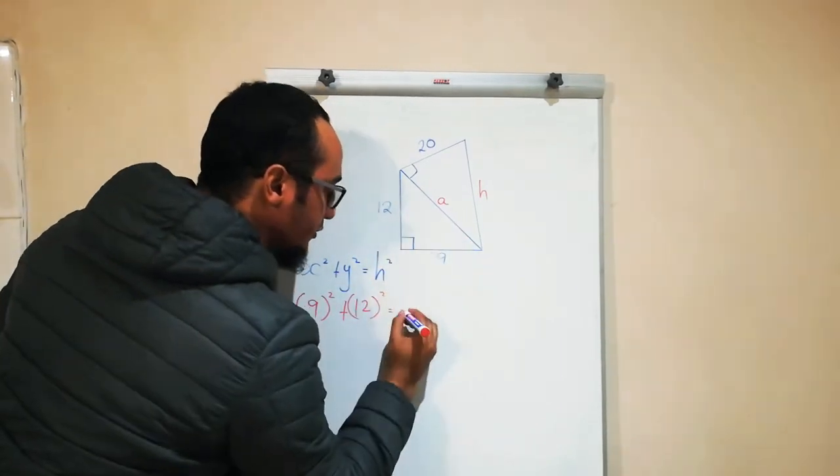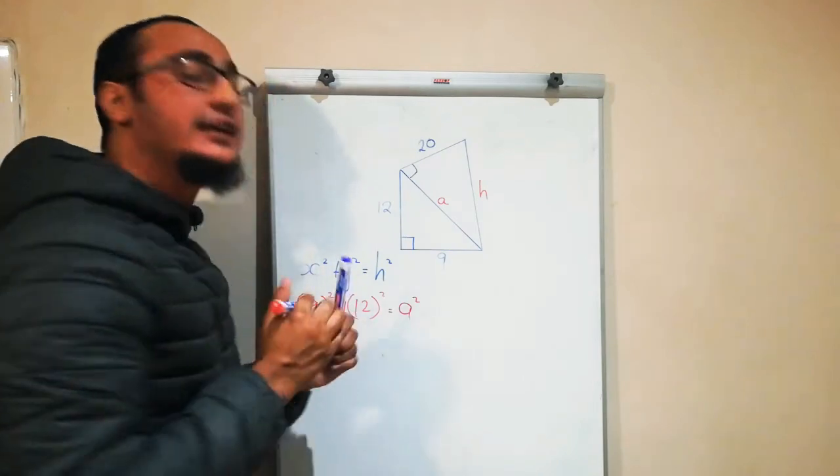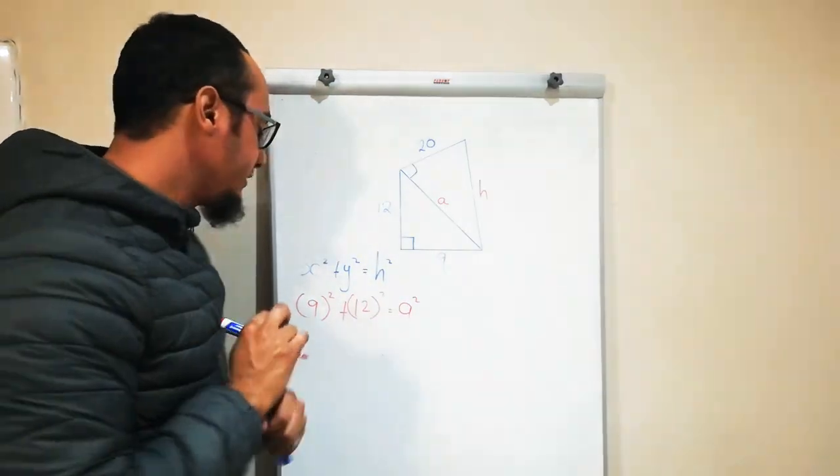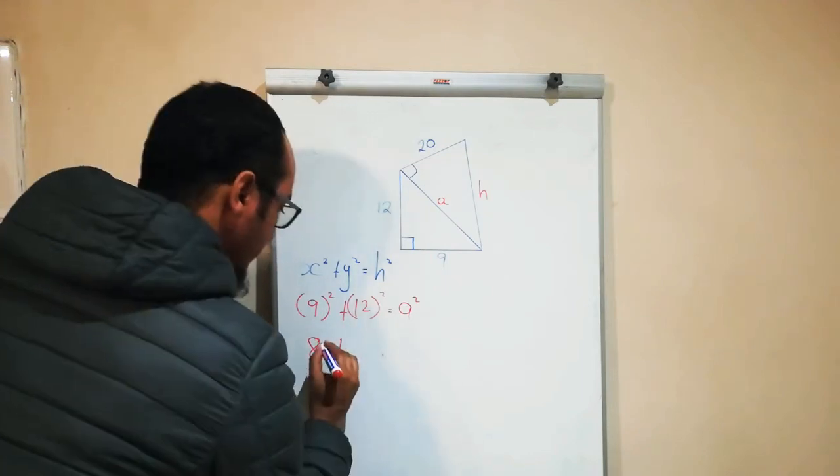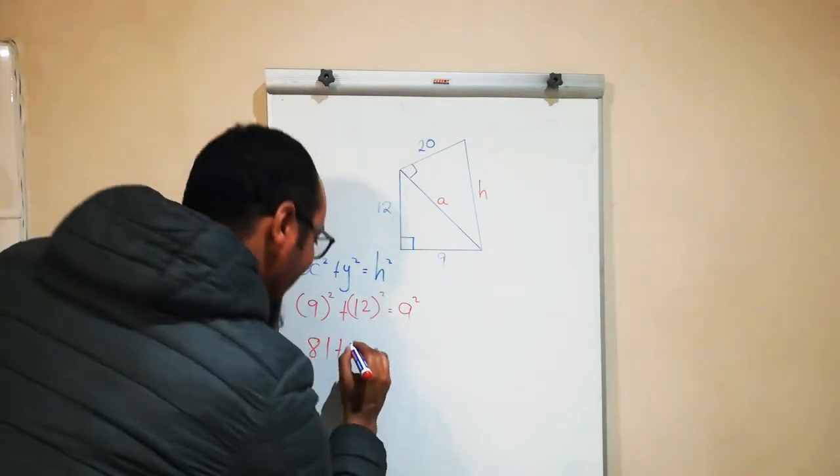So instead of h, I'm going to write a squared, because a is the value I'm calculating. 9 squared equals 81, plus 12 squared is 144, and that equals a squared.